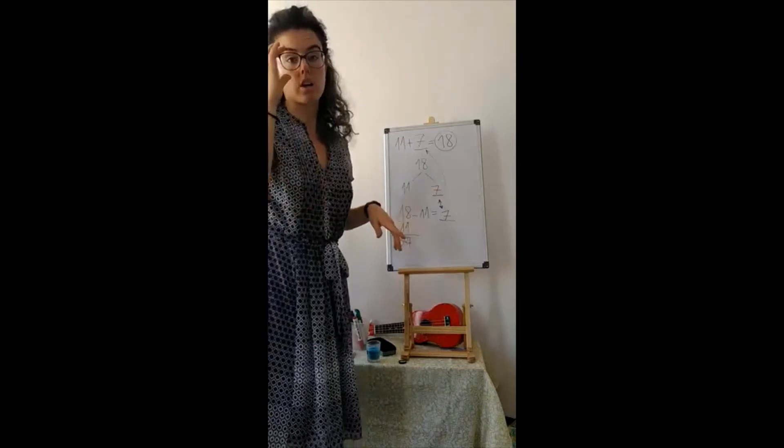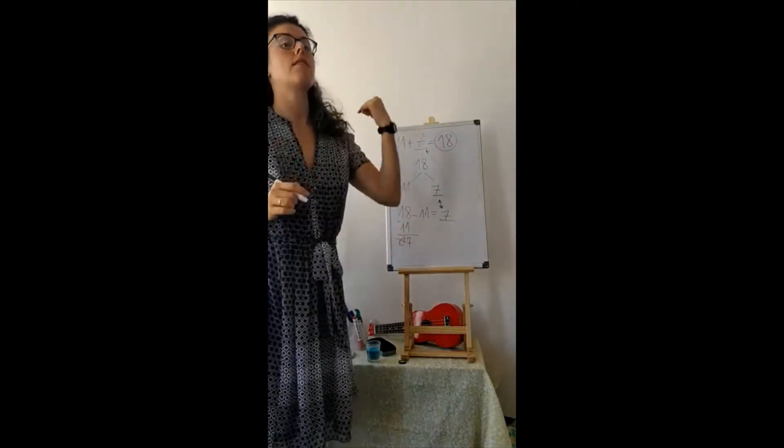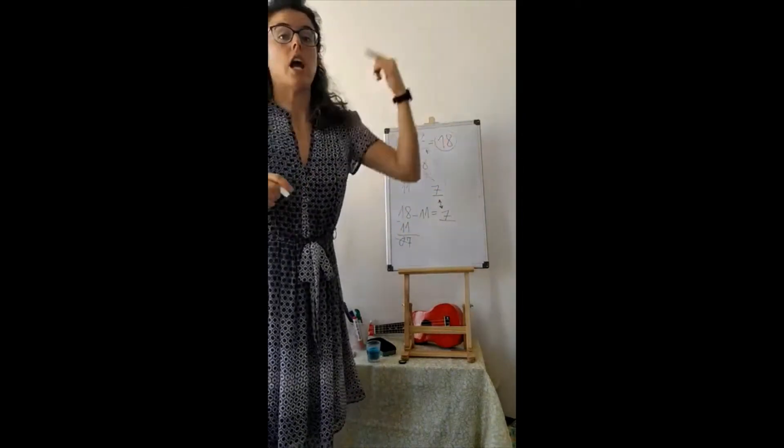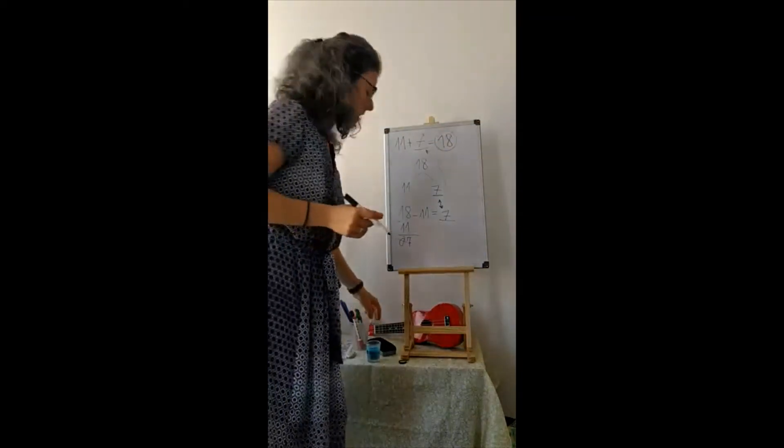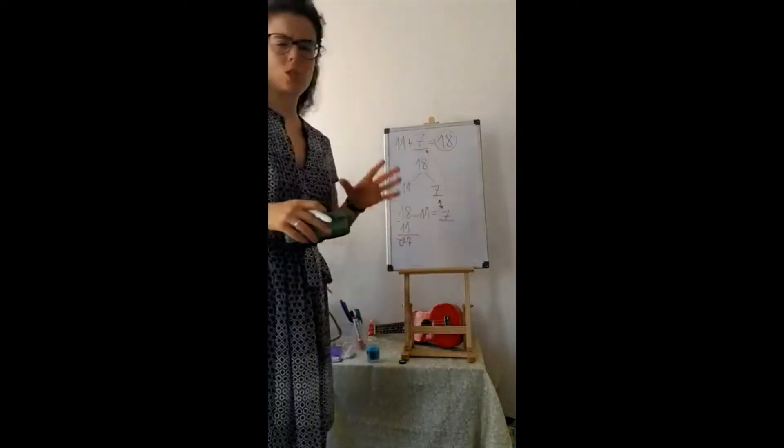Just like when we used our number line. We know that this number is seven, except instead of going forward, counting up, we count back. Or we count down. Let's do another problem.